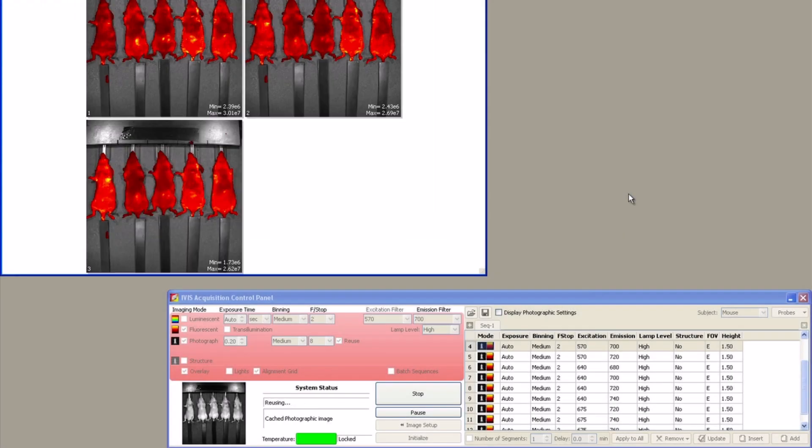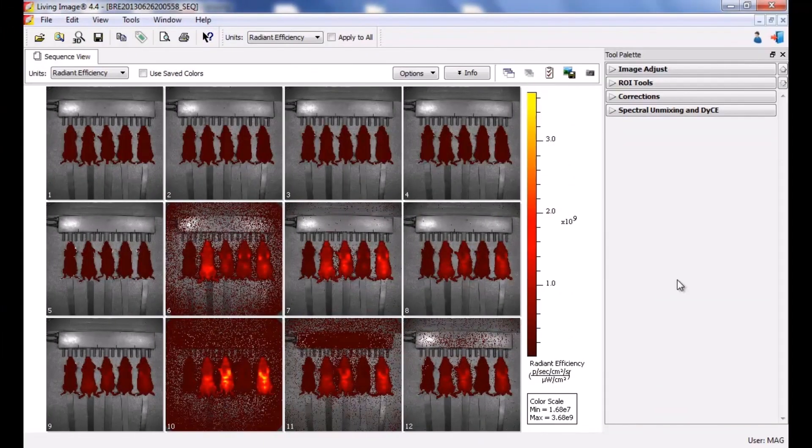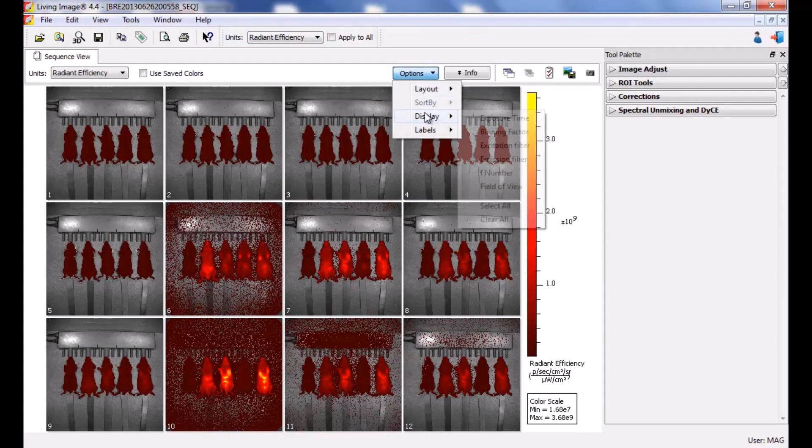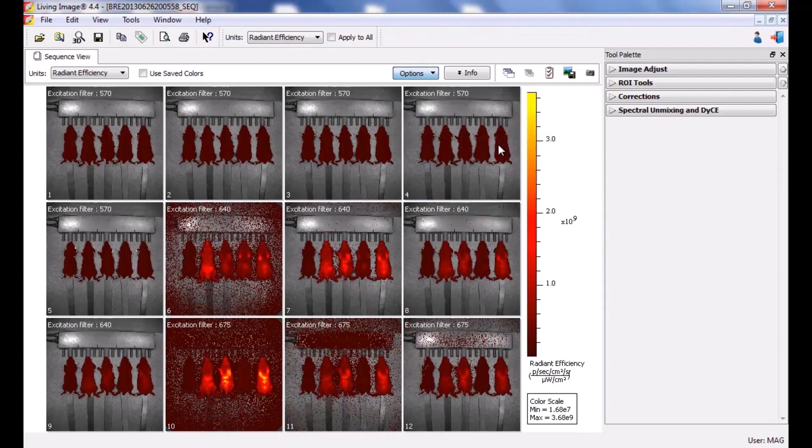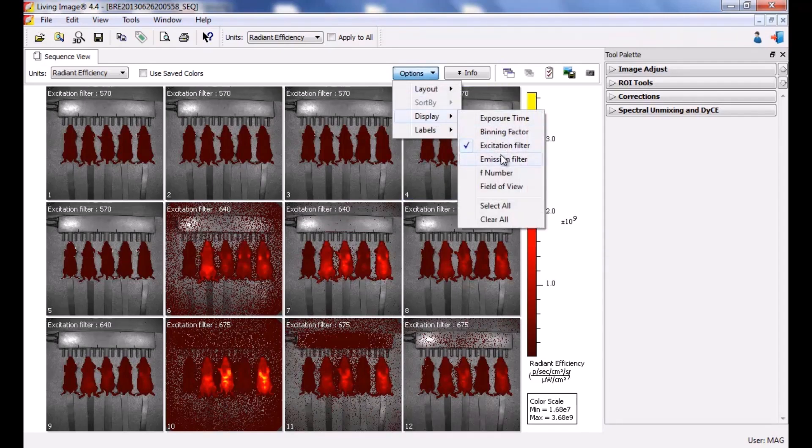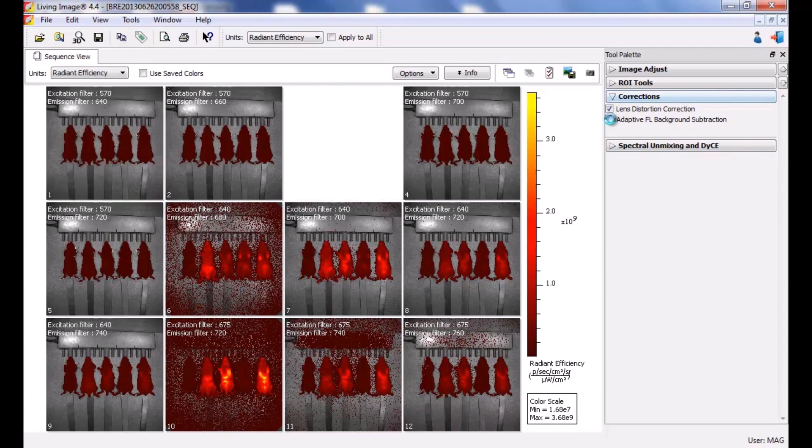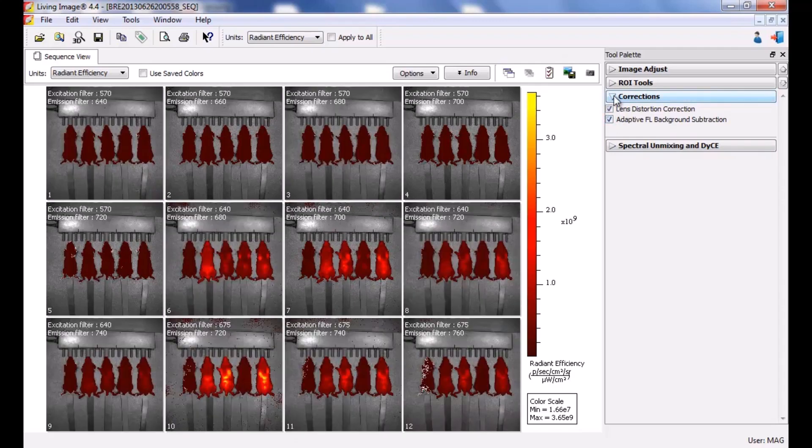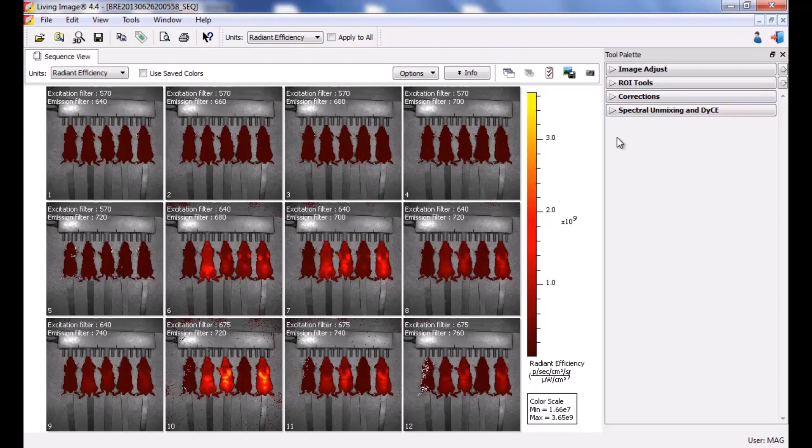The sequence editor will open and each filter pair selected will represent one image in the sequence. In this example, 12 images will be captured sequentially. Click acquire sequence and label your images appropriately. Once the instrument has finished acquisition, the status light will turn green. Remove the animals and return them to their cages. Using this acquired data set we will now generate our spectral libraries. To display the filters on top of the images, click the options button then select display excitation and emission filters.